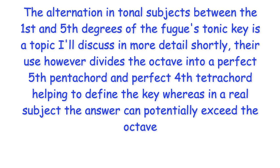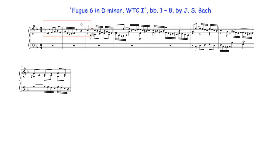The alternation in tonal subjects between the first and fifth degrees of the fugue's tonic key divides the octave into a perfect fifth pentachord and perfect fourth tetrachord, helping to define the key, whereas in a real subject the answer can potentially exceed the octave. Here, for example, the subject beginning on the tonic note D is framed by a perfect fifth interval spanning its length, and the real answer, using the same structure but beginning on the dominant note A, reaches the note E at the upper limits of its perfect fifth span, thereby exceeding the D octave limit.